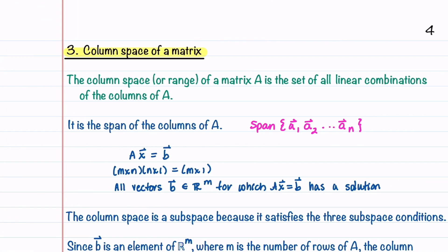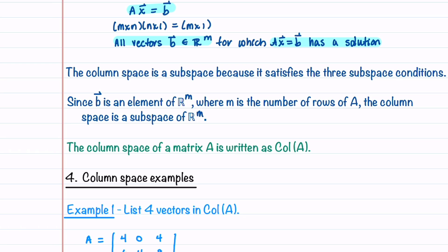Let's now talk about the column space of a matrix. The column space or range of a matrix A is the set of all linear combinations of the columns of A — equivalently, the span of the columns of A. Looking at the sizes in Ax = B, the span of the columns of A is all vectors B in R^m for which Ax = B has a solution; B is just a linear combination of the columns of A. Like the null space, the column space is also a subspace because it satisfies the three subspace conditions. Since B is an element of R^m where m is the number of rows of A, the column space is a subspace of R^m. We write it as Col(A).